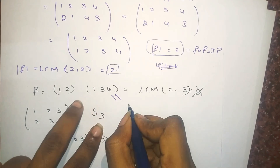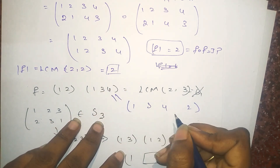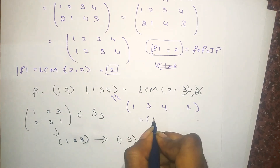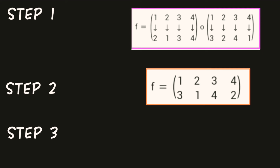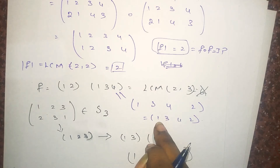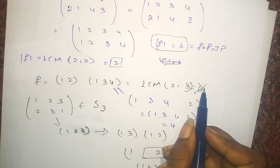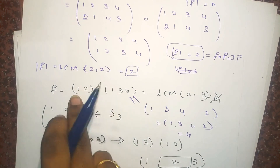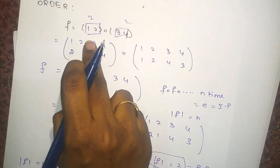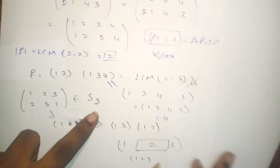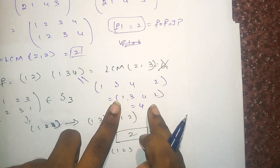I'm going to write (1 2)(1 3 4) as: write 1 and 2 separated by a space, then 3 and 4. Fill the spaces with 3 and 4, so it becomes the single cycle (1 3 4 2). The order for this is 4. You don't have to find the LCM of 2 and 4 because these cycles are not disjoint — there is only one bracket now, so the order is 4.